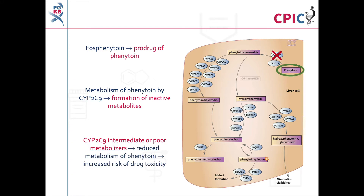Phenytoin is metabolised by CYP2C9 to form inactive metabolites. In CYP2C9 intermediate or poor metabolisers, metabolism of phenytoin is reduced. This can lead to an increased risk of drug toxicity.